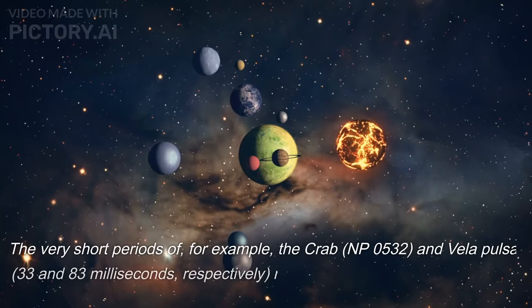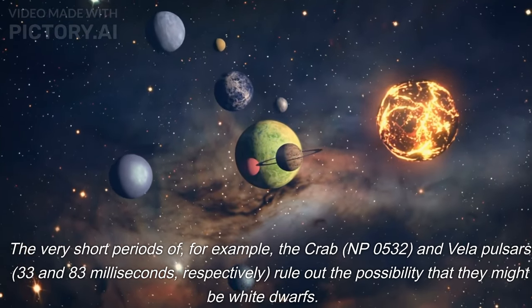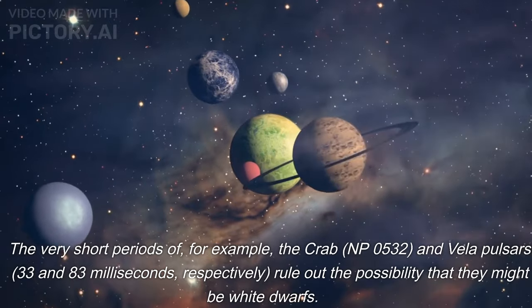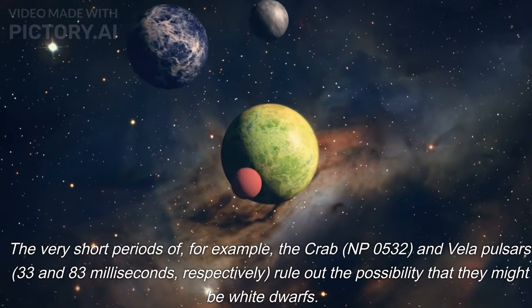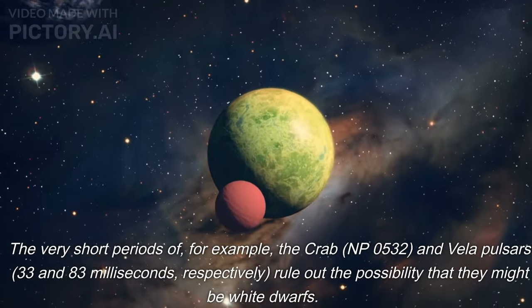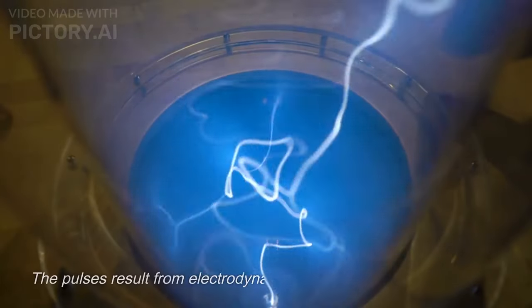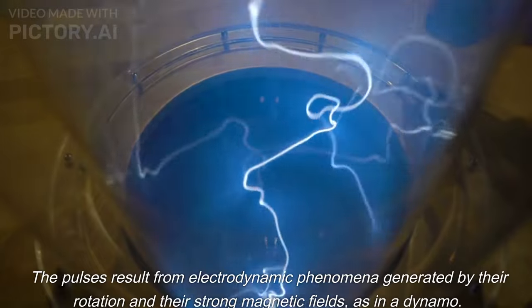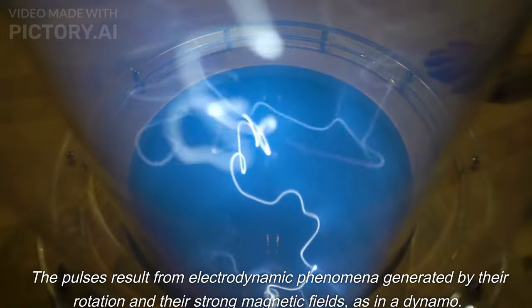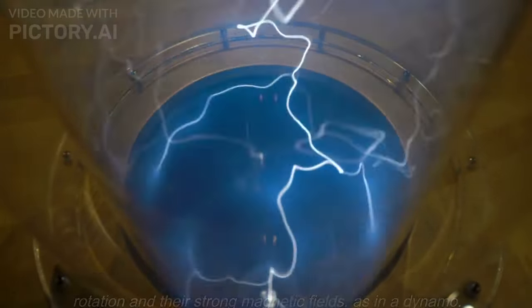The very short periods of, for example, the Crab, NP-0532, and Vela pulsars, 33 and 83 milliseconds, respectively, rule out the possibility that they might be white dwarfs. The pulses result from electrodynamic phenomena generated by their rotation and their strong magnetic fields, as in a dynamo.